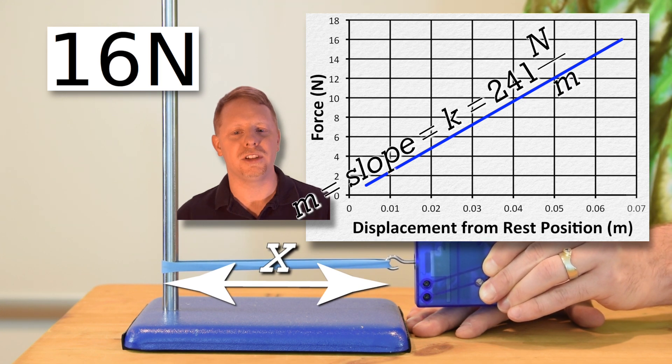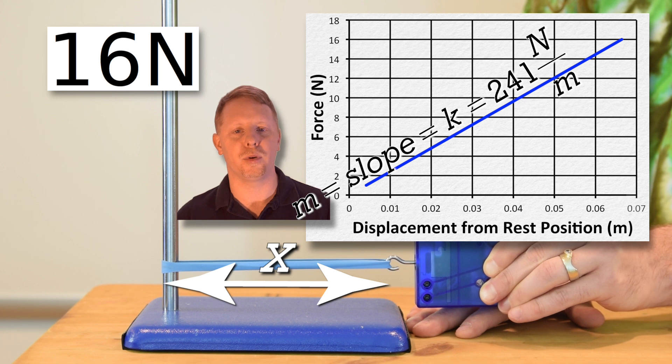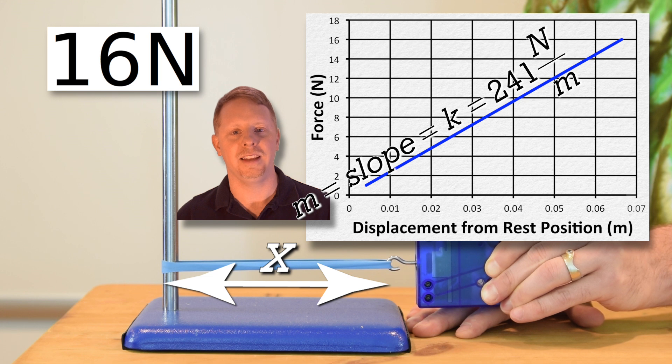The slope of the line which describes this data is the spring constant of the rubber band. For this rubber band, the slope of the line, and therefore the spring constant, is 241 newtons per meter.